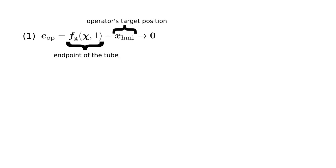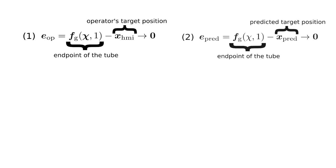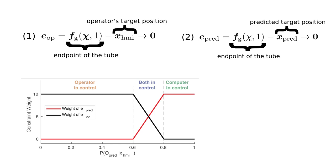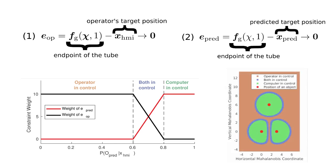This attractive behavior is achieved by setting two conflicting soft constraints. The first constraint guides the endpoint of the tube towards the operator's target position, specified in this case with the joystick. The second constraint guides the same endpoint towards the position of the inferred object. The weights of both conflicted constraints are modulated according to the posterior probability of wanting to grasp the predicted object given the operator's target position. This results in shared control between the operator and the computer.